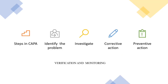The steps in CAPA — corrective action and preventive action — include: identification of the problem, carrying out the investigation, taking either corrective or preventive action, and verification and monitoring.